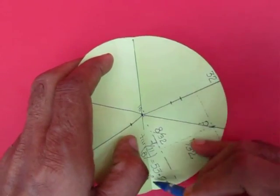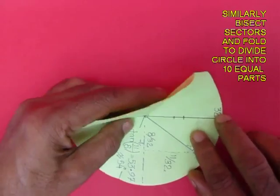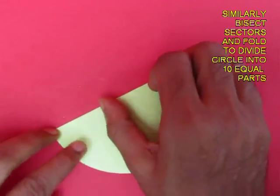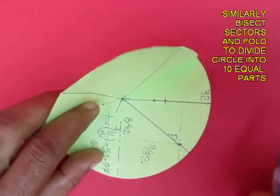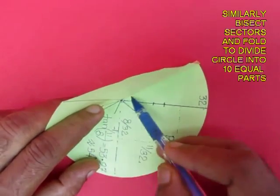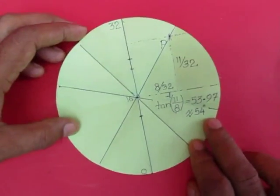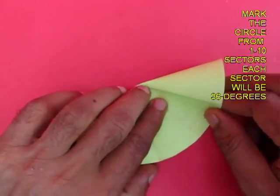Now once you have got these reference points, you can always bisect these sectors to get the midpoints. Similarly bisect the other sectors to divide the circle into 10 equal parts and each internal angle would be 36 degrees.